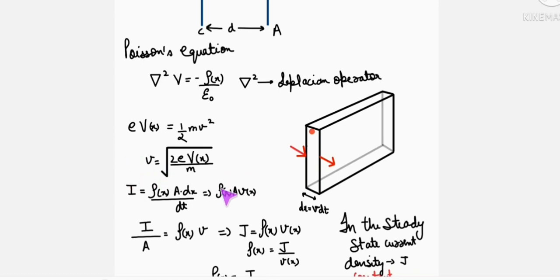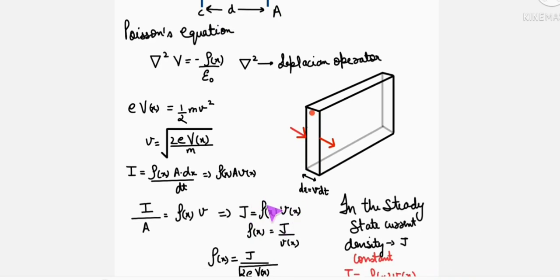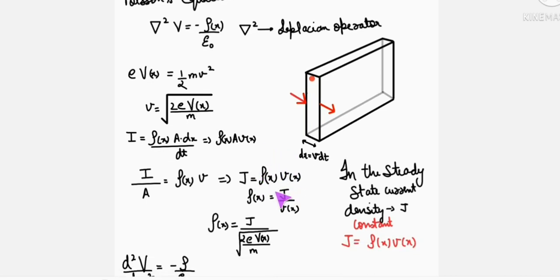So I upon A is known as current density, and this J will equal rho into V. Now this rho and V are functions of X. We will see what are their values and how they depend on X. So J equals rho into V.